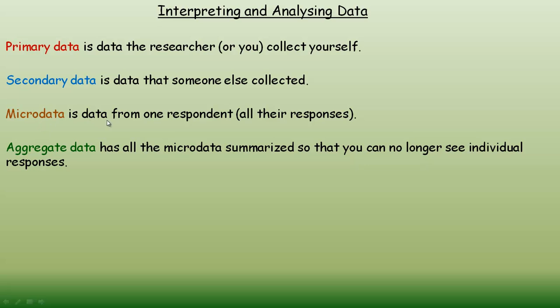Microdata is data from one respondent. So let's say you're giving a survey to a number of people with 20 questions on it — the answers from one particular person to all 20 of those questions would be the microdata for that person. Once all the data has been grouped together and summarized, it's called aggregate data, and the microdata can no longer be seen — you can't see individual responses because it's all in a summarized form.